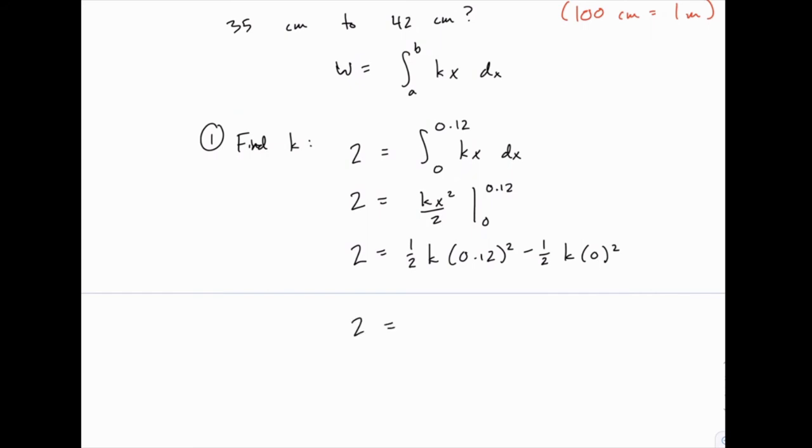Then if we multiply this out, we'll get 0.0072 times k equals 2, which means that k equals 2 divided by 0.0072, which works out to about 280 newtons per meter.